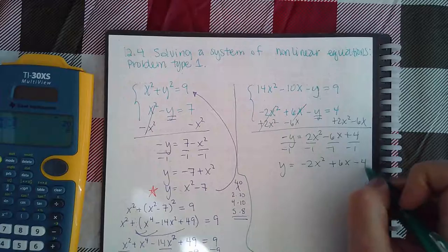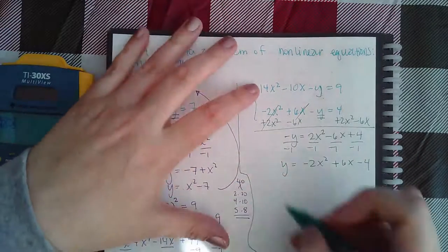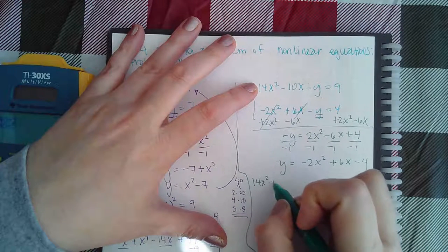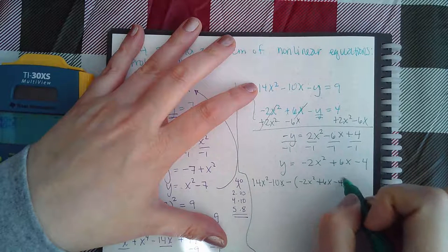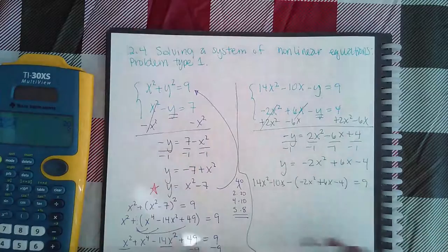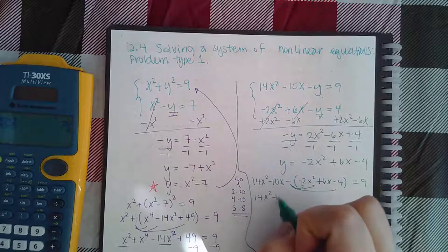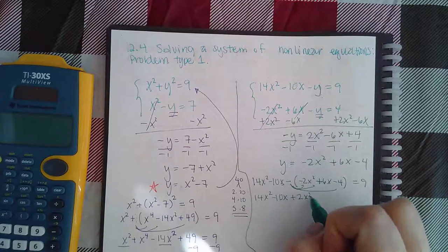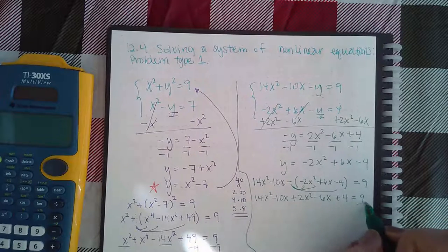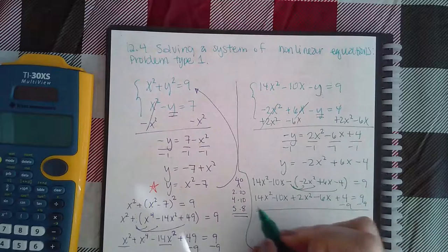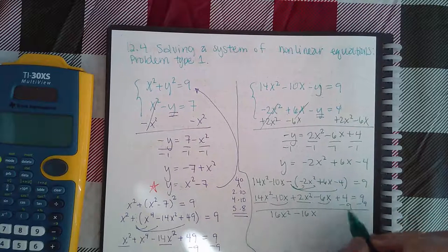I'm going to substitute this into the function that I didn't touch. The function is going to become 14x² minus 10x minus all of this that gets plugged in for y. You do have a minus sign on the outside so that does have to get distributed. It becomes positive 2x² minus 6x plus 4 equal to 9. I'm going to minus 9 on both sides at the same time and combine my like terms.